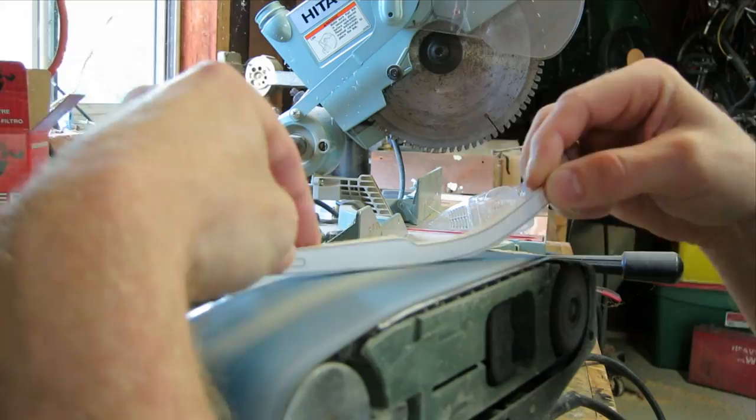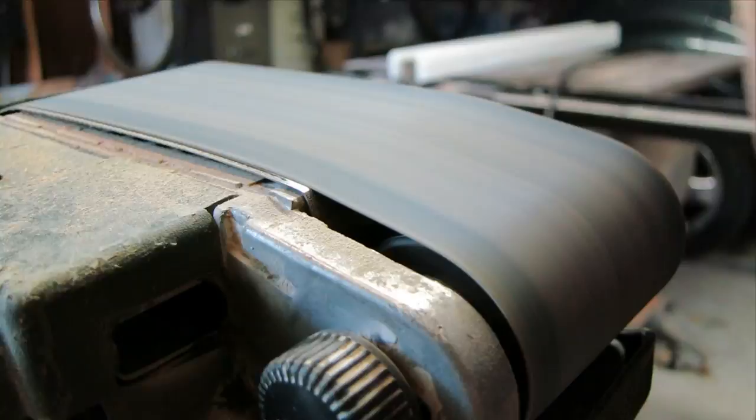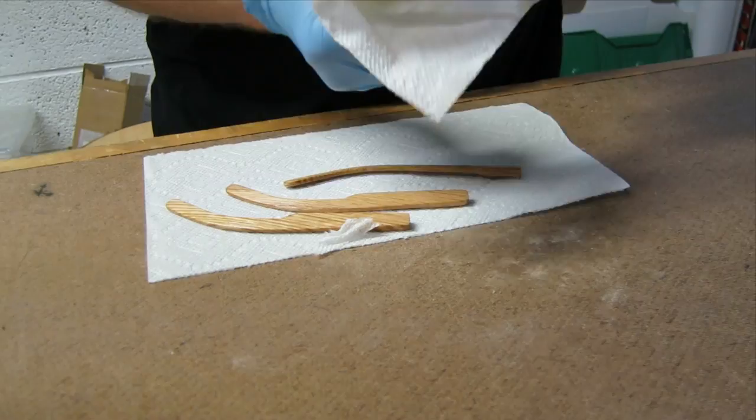I cut out the temples on a bandsaw and then I steam-bend them to form them into the shape that I want. And I cross-drill little slots for the hinges. And here I'm just finishing them, putting on a little bit of linseed oil to bring out the grain before they get mounted to the frame.